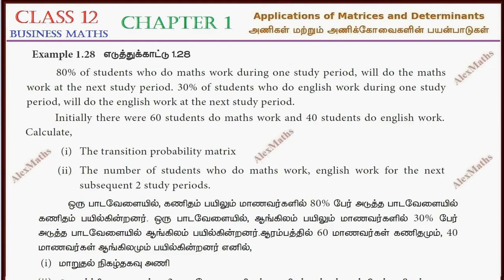Hi students, this is Alex here. Example 1.28. 80% of the students who do max work during one study period will do the max work at the next study period. Transition probability matrix.